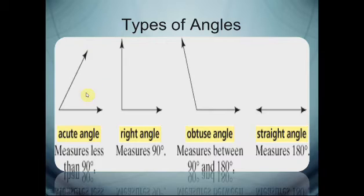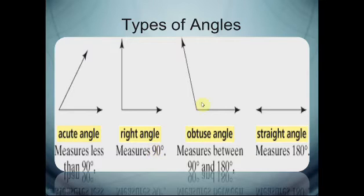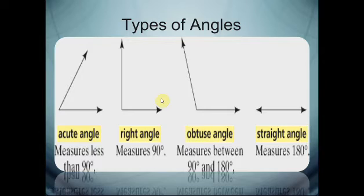Types of angles. We have four types of angles. The first is called the acute angle — its measure is more than zero and less than 90. The right angle — its measure is exactly 90 degrees. The obtuse angle — its measure is more than 90 and less than 180. And the straight angle — its measure is 180. We measure angles with a tool called a protractor.